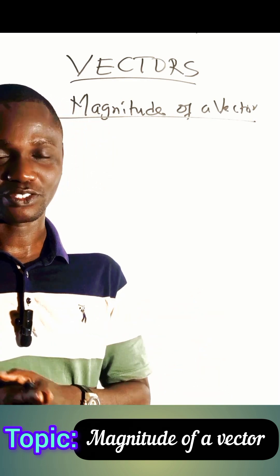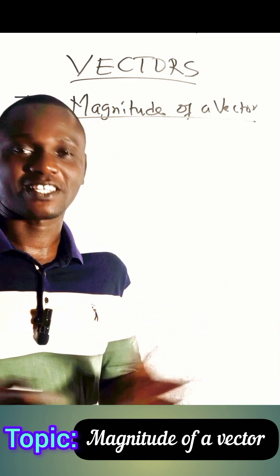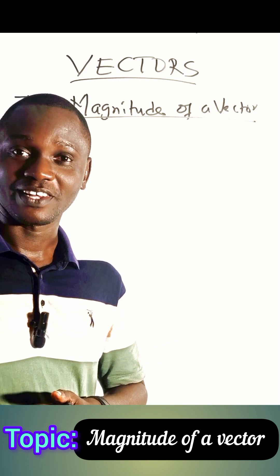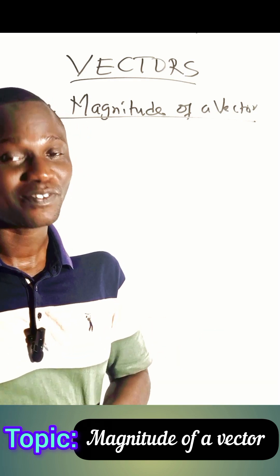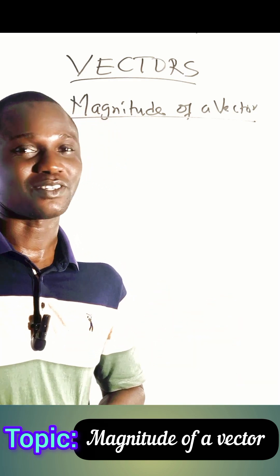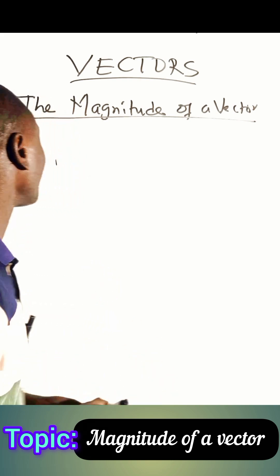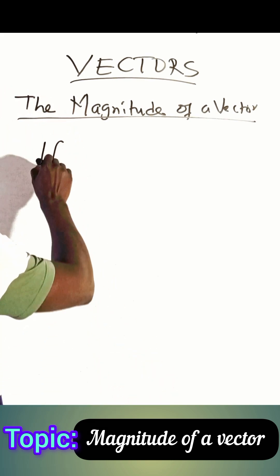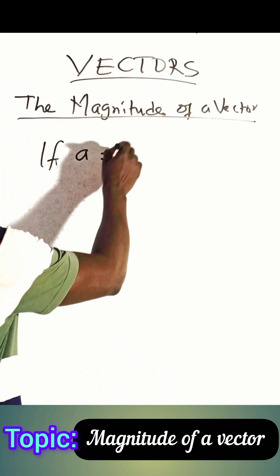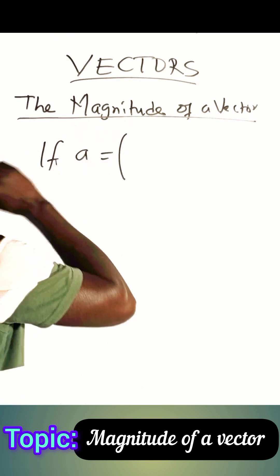It has magnitude and direction. For example, force is a vector, velocity is a vector, acceleration is a vector. All these are vectors. If a is a given vector and it is written in this form...